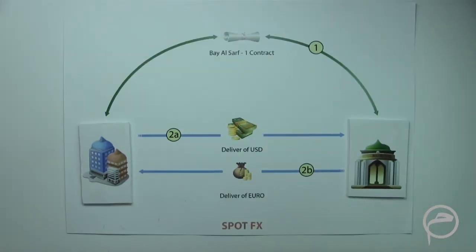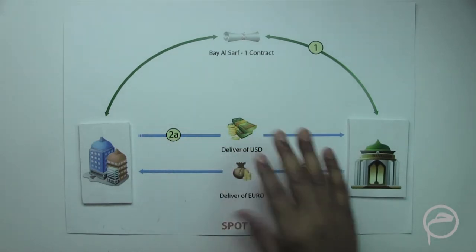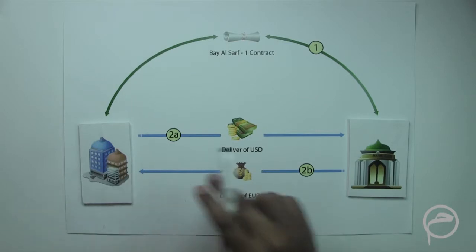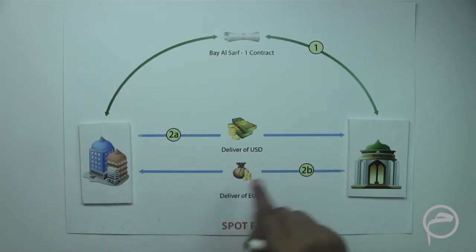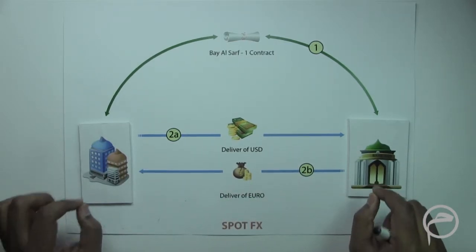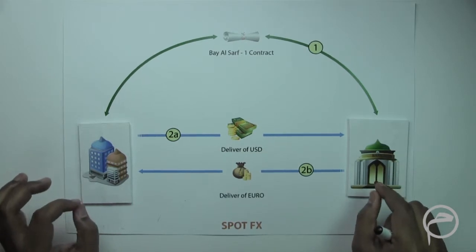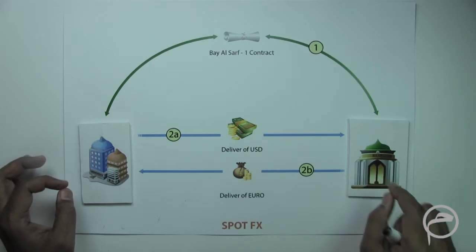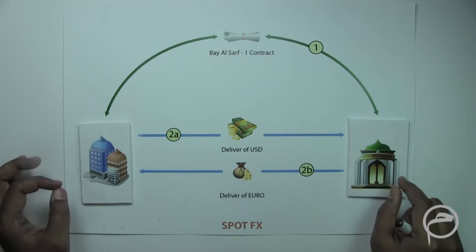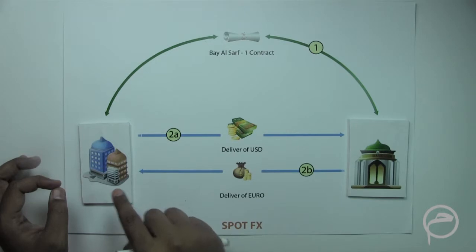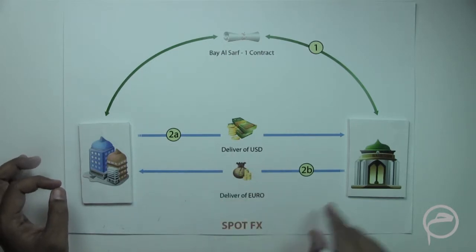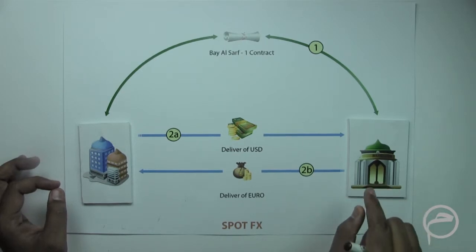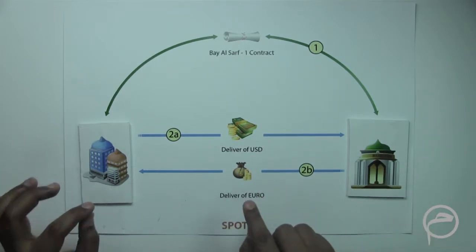Now let us discuss about an Islamic spot FX. In an Islamic spot FX, two currencies are exchanged against each other. The basic rule is that the transaction should be executed on the spot, and both currencies must be delivered to both parties simultaneously. Any deferment of one or both currencies will render the transaction non-Sharia compliant.